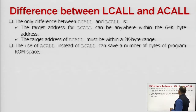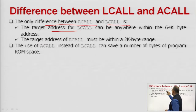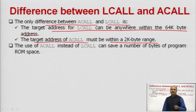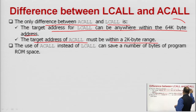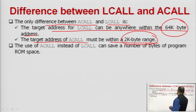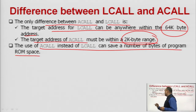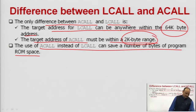The difference between LCALL and ACALL: the target address for LCALL can be anywhere within 64 kilobytes of address space, while the target address of ACALL must be within a 2-kilobyte range. This is the main difference between the long call and the absolute call. Using ACALL instead of LCALL can save a number of bytes of program memory, that is ROM space.